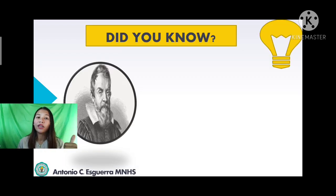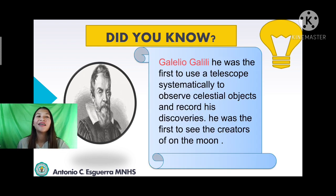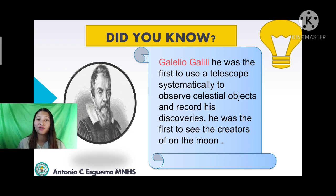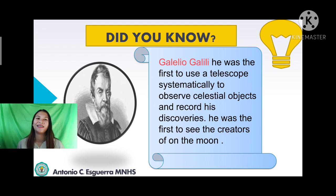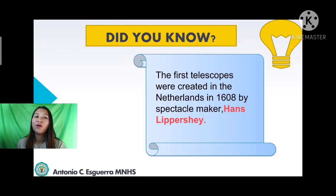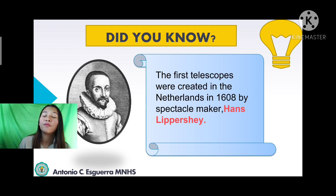Did you know that Galileo Galilei is often credited with inventing the telescope, but actually he did not? Galileo was the first to use the telescope systematically to observe celestial objects and record his discoveries. He was the first to see the craters of the moon, discovered sunspots, observed the four largest moons of Jupiter, and also observed the phases of Venus. Credit for creating the telescope goes to Hans Lippershey, who created it in the Netherlands in 1608.